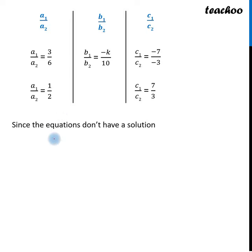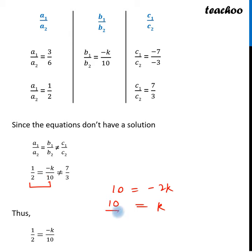So our values were put. Now I want to find out the k value. So we will take the equality condition. So 1 by 2 is equal to minus k by 10. If we cross multiply, then 10 equals minus 2k. So k equals 10 by minus 2, or minus 5.